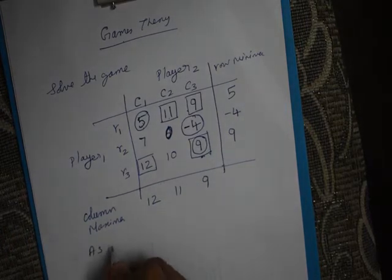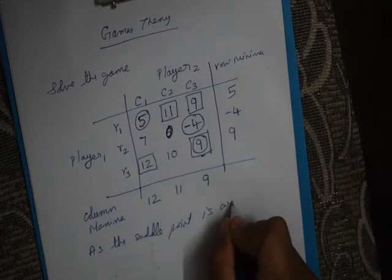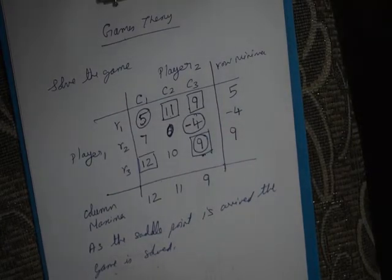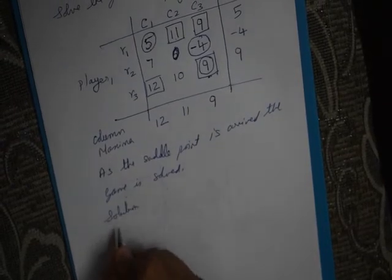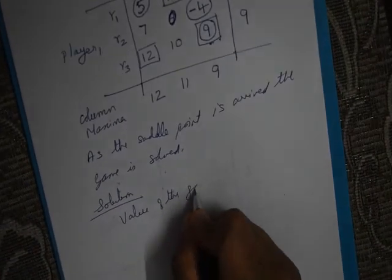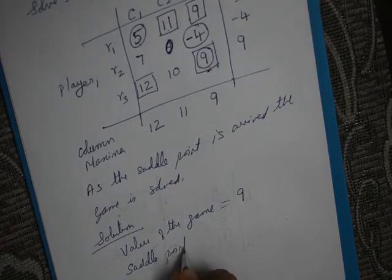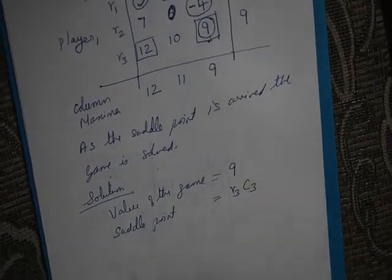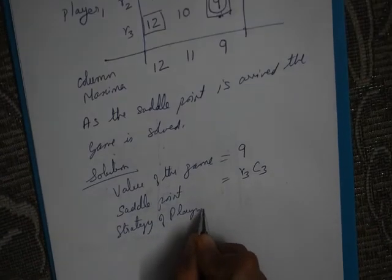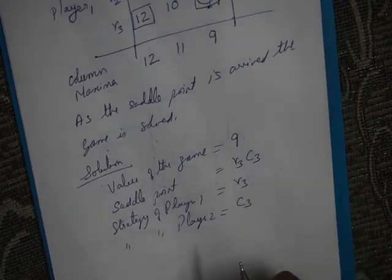As the saddle point is arrived, the game is solved. Write the solution as: value of the game equals 9, which is located at the saddle point. Saddle point is at row 3, column 3. Strategy of Player 1 equals row 3, and strategy of Player 2 equals column 3.